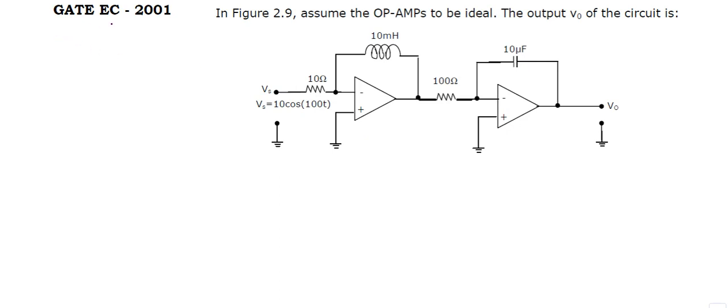The question appeared in Gate ECE paper 2001. It is given that in the figure, assume the operational amplifiers to be ideal, then the output voltage VO is equal to.